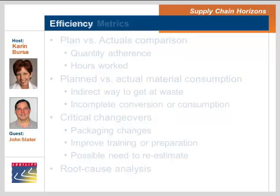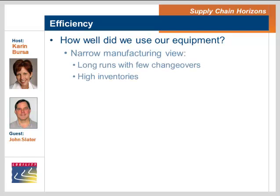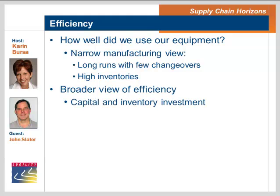These measures really get down to efficiency. One way to look at efficiency is how well did we use our equipment — but if that's all we do, we'd be driven as manufacturing folks to have long runs, few changeovers, and possibly very high inventories with the associated cost. If we broaden out that view on efficiency to really think about efficient use of capital and inventory investment as well as the equipment investment, that can drive out some of the older approaches such as absorption cost methodology, to look more at the true picture of the total cost of those scheduling and sequencing decisions we make every day as we're running our factories.